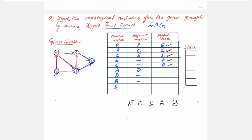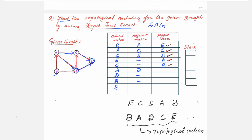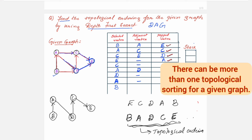Now reverse this order. You get: B, A, D, C, E. This becomes your topological ordering. Reading from the graph: first B, then A, then D, then C, and finally E. This is one valid topological sequence.